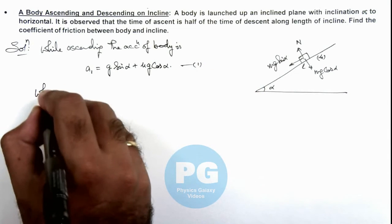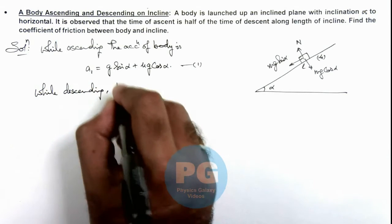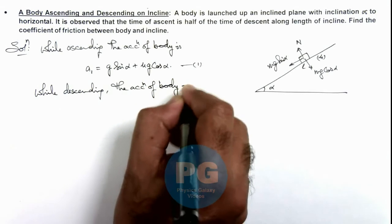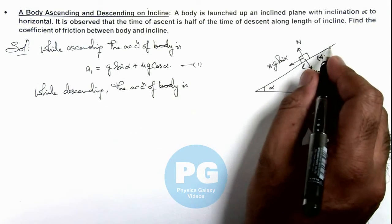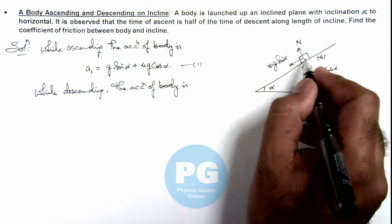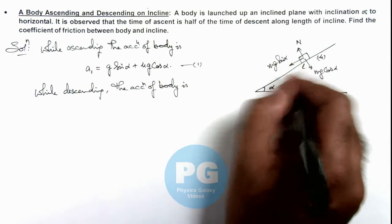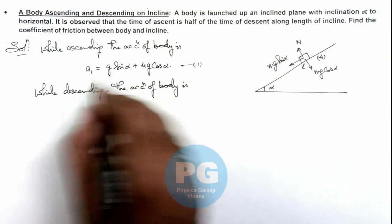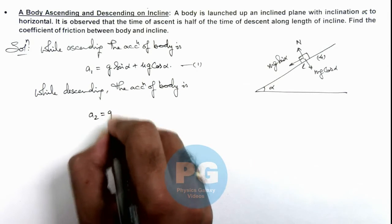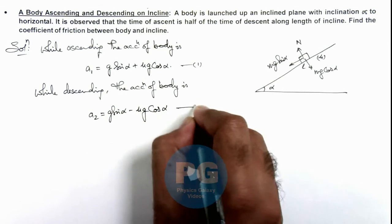And we can similarly write while descending, the acceleration of body is—when it comes down the friction will act in opposite direction and the force due to which the body is sliding is mg sine alpha minus mu mg cos alpha. So here it is acceleration because when it is going up and ascending this would be retardation. So here the value of acceleration we can write as a₂ which is g sine alpha minus mu g cos alpha. Say this is our second equation.